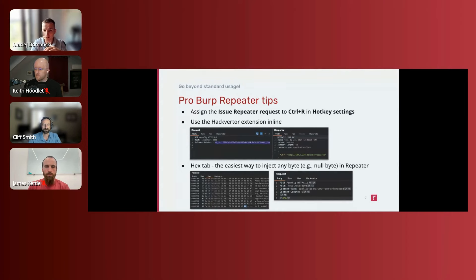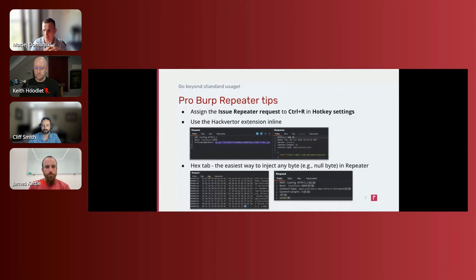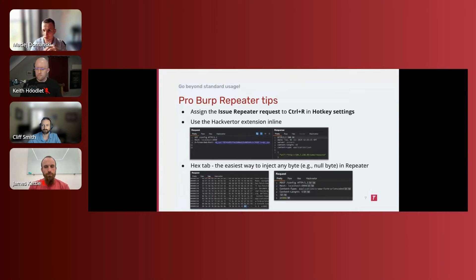Another tip is to use the HackVerter extension inline in requests. For example, you might want a randomized IP each request, or a SHA-256 hash, or Base64 with some URL encoding. It's a great basis for tinkering with any request. And you can use the hex tab in the Logger to inject things like null bytes directly.